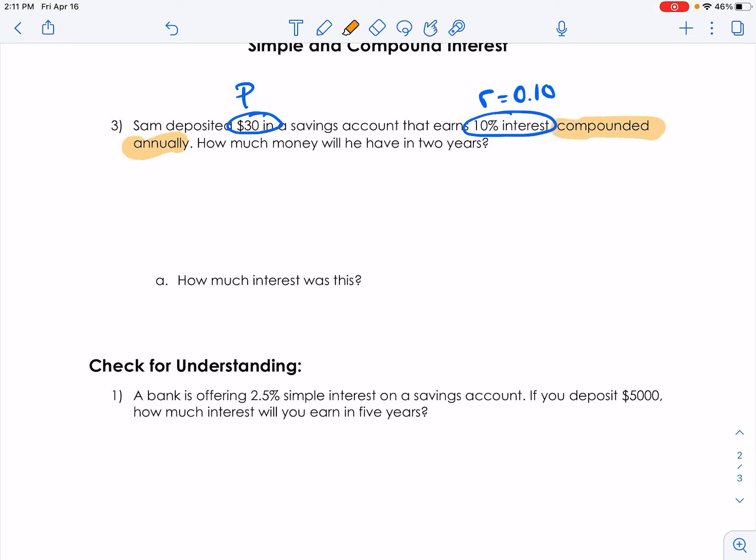Compounded annually. So we're using our compound formula. How much money will he have in two years? So our compound formula is A, so it's the amount we have at the end, equals P times 1 plus R to the power of T.